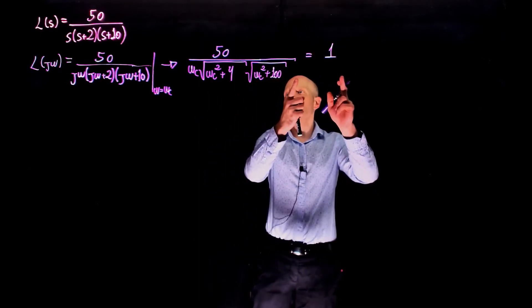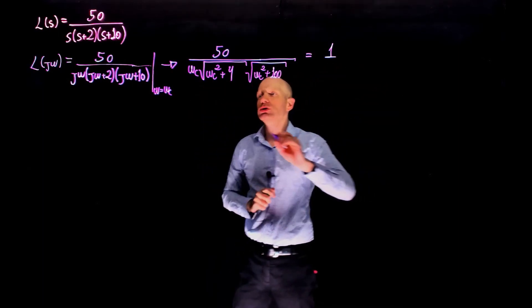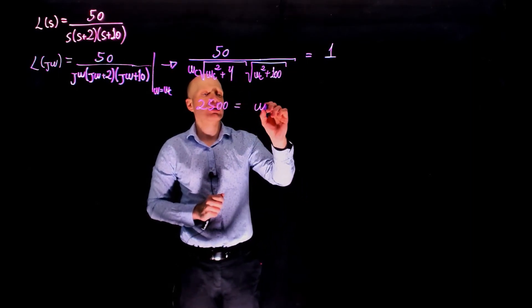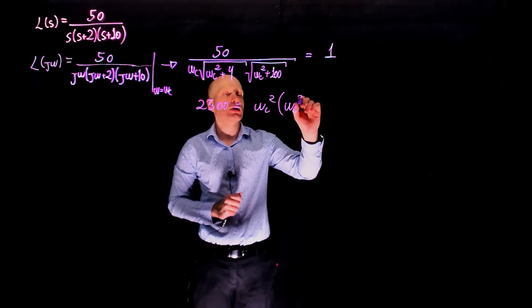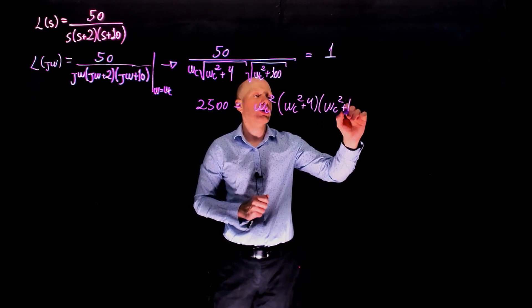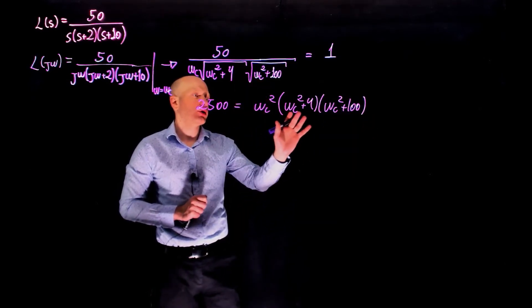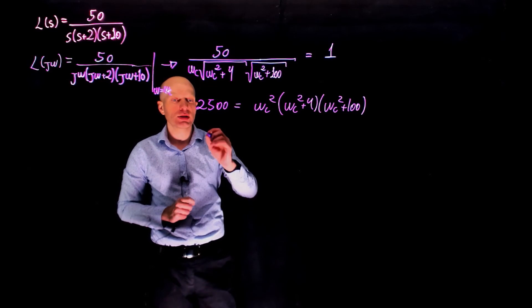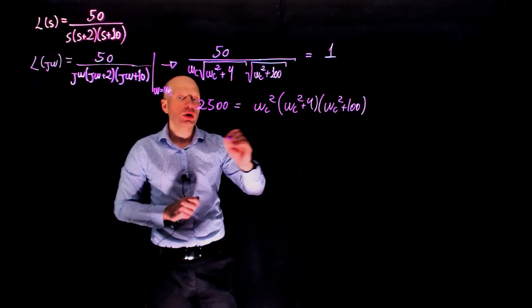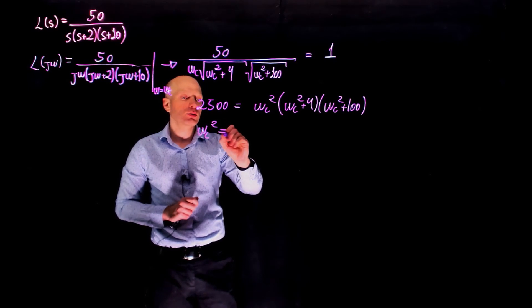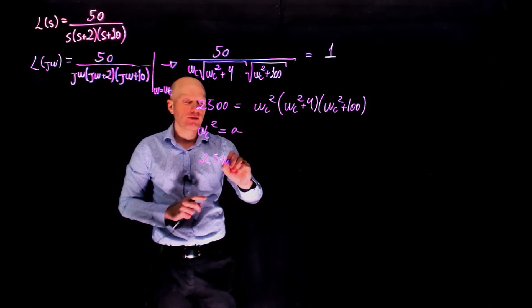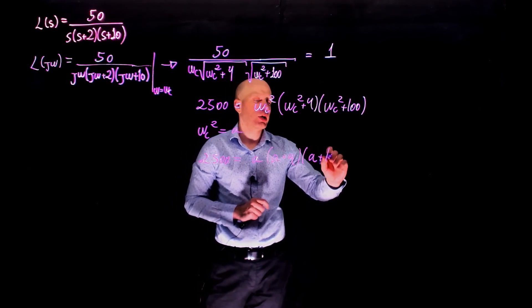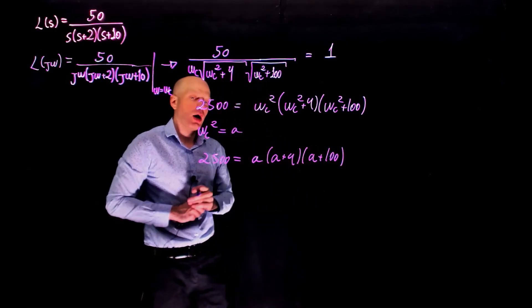We can multiply the denominator by 1 and take the square of both sides to eliminate the square roots. We are left with 2500 equals omega_c squared times (omega_c squared plus 4) times (omega_c squared plus 100). We ended up with a 6th order equation, which is complicated to solve. We can let a equal omega_c squared and rewrite this as 2500 equals a times (a plus 4) times (a plus 100), which is now a 3rd order equation and much more manageable.